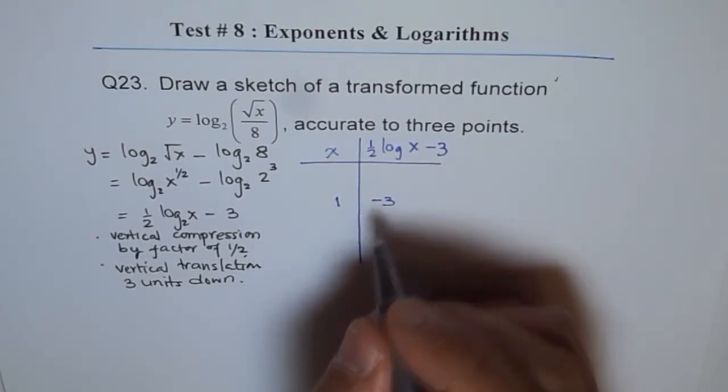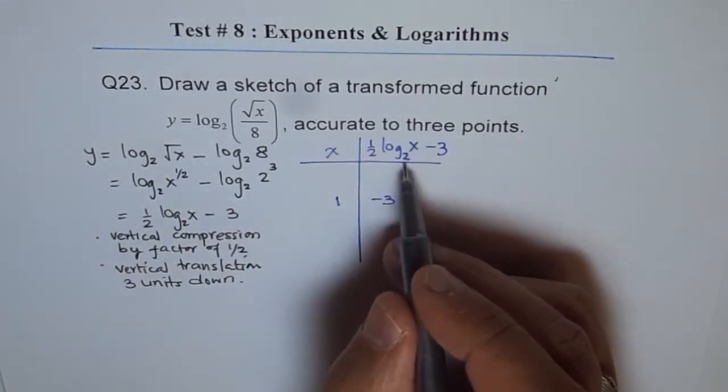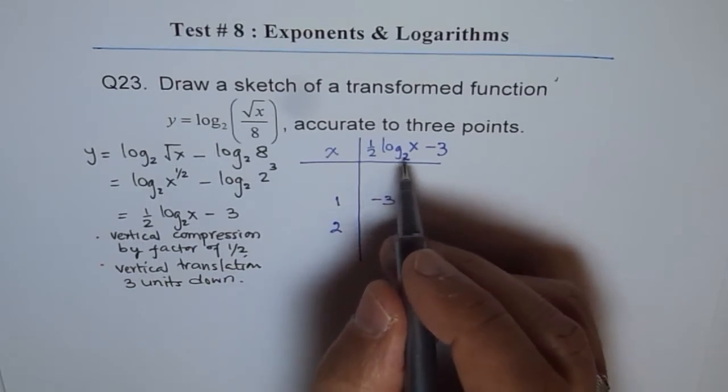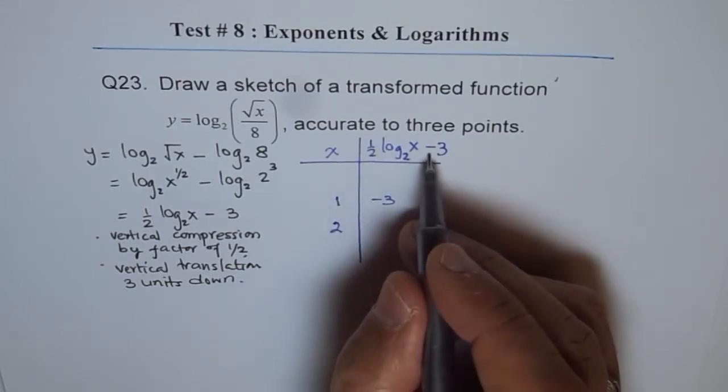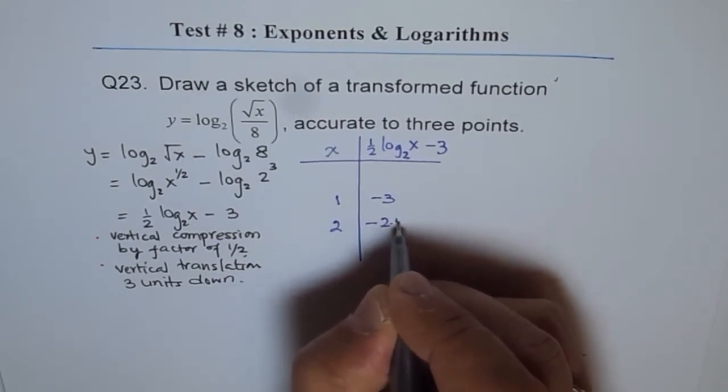The other good value is, since this is base 2, the other good value is 2 itself, because log of 2 will be 1. So we can take 2 as the value. So in that case, this is half minus 3, which is minus 2 and a half, or let me write 2.5.